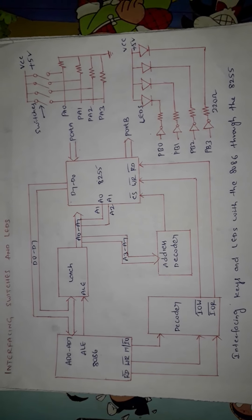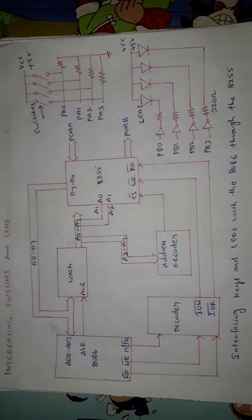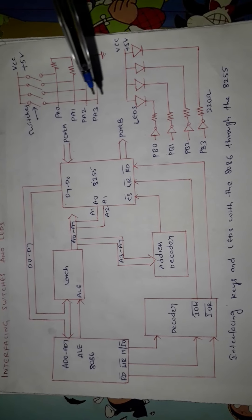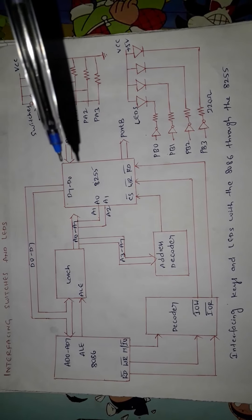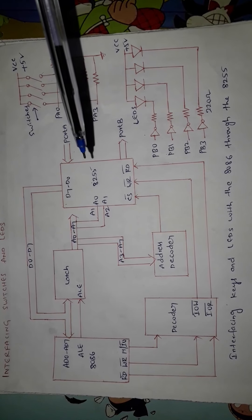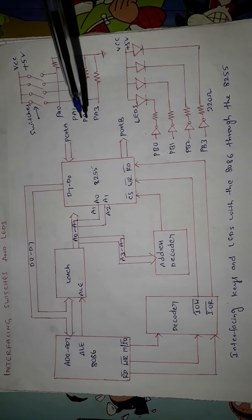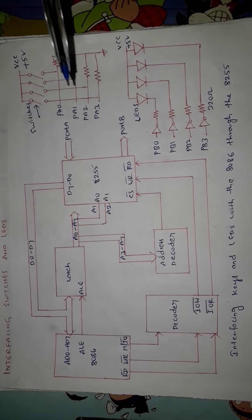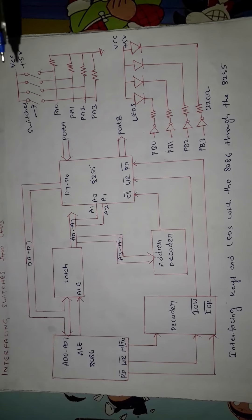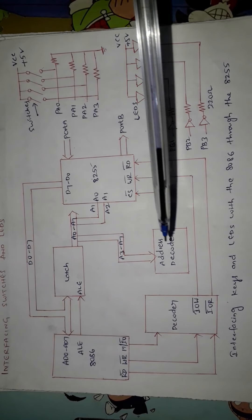Hello friends. In this video lecture we will see how to interface switches and LEDs with the 8086 microprocessor by using a 8255 PPI — a programmable peripheral interface. If you look into this figure, we are interfacing four switches and four LEDs to the 8086 by using 8255 and with the help of decoders and latches.